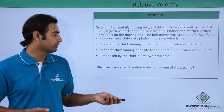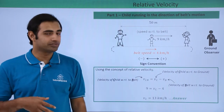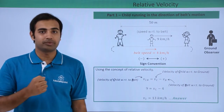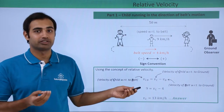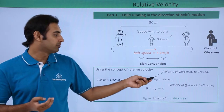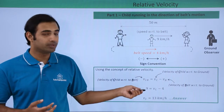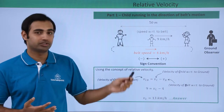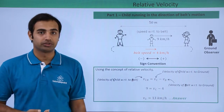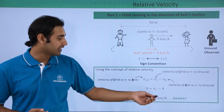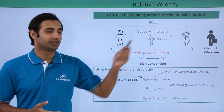Let's begin with the first part. The belt moves in the positive direction at 4 km per hour, and the child runs with respect to the belt at 9 km per hour, also in the direction of the belt. Using the relative velocity equation — velocity of child with respect to belt equals velocity of child minus velocity of belt — with sign convention right side positive: 9 = v_child − 4, so v_child = 13 km per hour. The ground observer sees the child running at 13 km per hour in the rightward direction.